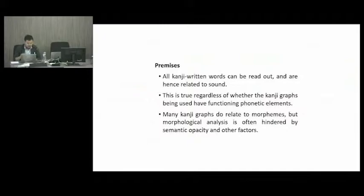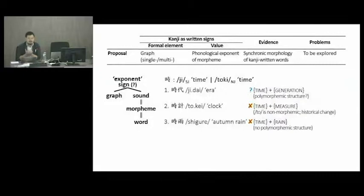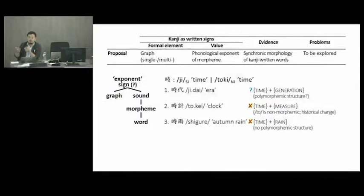The third point: many kanji graphs do relate to morphemes, but morphological analysis is often hindered by semantic opacity and other factors. So morphology may have an important role, but that's not the entire picture. My proposal is, firstly, rather than looking at phonetic elements, let's look at the graphs and ask what their values are: phonological exponents of morphemes. Morpheme is the unit of meaning and doesn't have any sound, but in language it is mapped onto the domain of phonology for being pronounced. I assume that each graph corresponds to the phonological form of the morpheme in question.